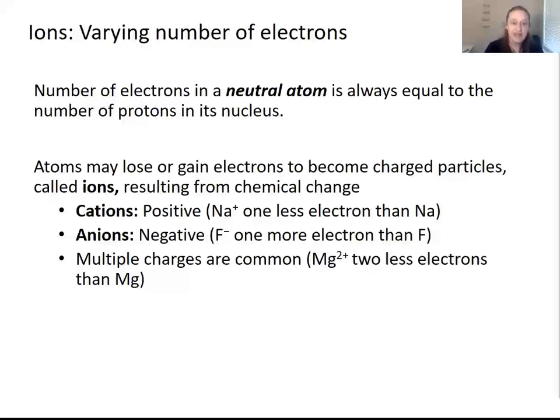Positive ions are called cations, and an example here is sodium plus, which has one less electron than a neutral sodium atom. Anions are negative ions, and they have extra electrons, so F minus has one more electron than F. It is also common to have multiple charges. For example, magnesium two plus has two less electrons than a neutral magnesium atom.